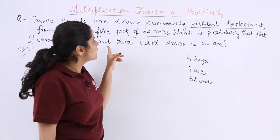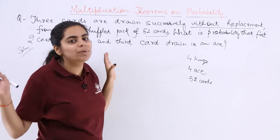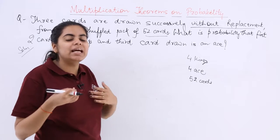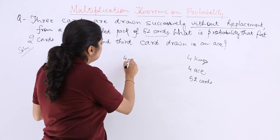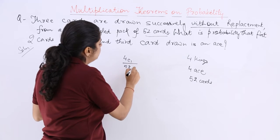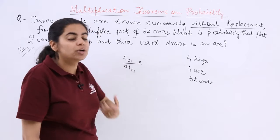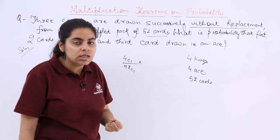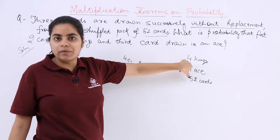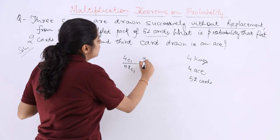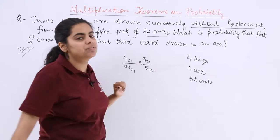For the first card, second card, and third card taken successively with no replacement, every time one card is reduced in number. So for the first draw of a king, it will be 4C1 over 52C1. The second time, drawing the second king, there will be only 3 kings left — because 4 kings were there and 1 has been taken out — so 3 kings left and 51 total cards left.